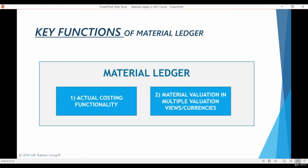In addition to Actual Costing, Material Ledger allows you to value your materials using different valuation views that can use different currencies. If you are not using Material Ledger, you can only value your stocks in a single currency. The most common setup has one valuation view for legal valuation using the company code currency, and a second valuation view using the group or parent company's currency to enable reporting across multiple subsidiaries. You can manage a maximum of three valuation views. It is also possible to create a profit center specific valuation view to manage transfer pricing of intercompany transactions.